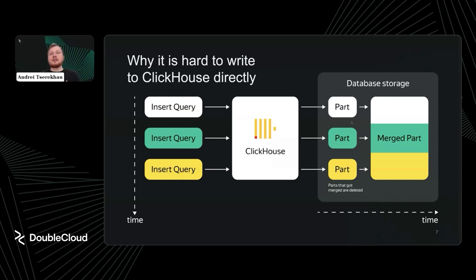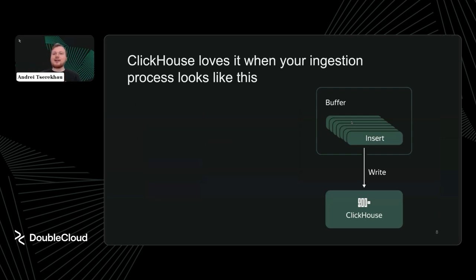To write data to ClickHouse efficiently, you need to aggregate data in a batched way — but the batches don't need to be very large. A reasonable batch size is somewhere between 50 and 200 megabytes. In an ideal world, if you want to set up a delivery pipeline to ClickHouse, you need a buffer that accumulates data and then flushes it to ClickHouse once the buffer is full. This is the ideal ingestion pattern.